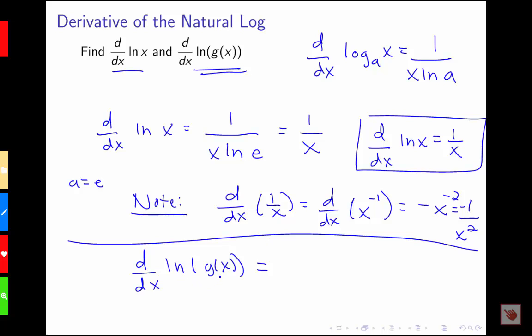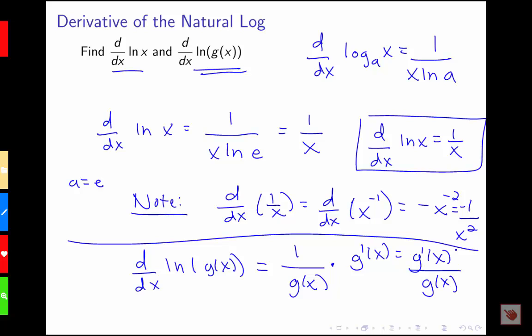If I want to generalize this to the derivative of the log of some function g of x, I'll be using my new log rule together with the chain rule. The derivative of log of g of x requires the derivative of the outside function, which is 1 over g of x, times g prime of x using the chain rule. So the derivative of log of g of x is g prime of x over g of x.